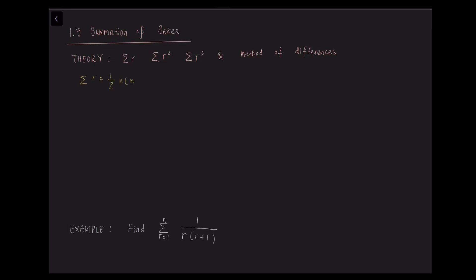The first is the sum of r. So r is any numbers from 1 to n, where n is infinity, and the general formula of the summation of r — which is like 1 plus 2 plus 3 plus 4 — is half times n times (n plus 1).